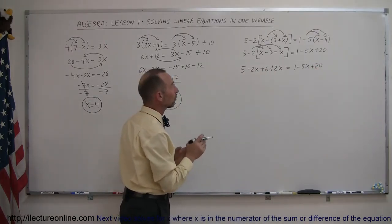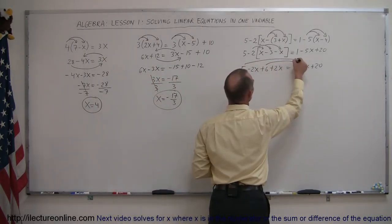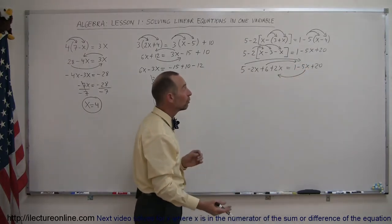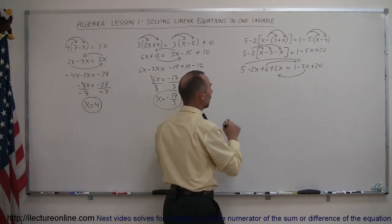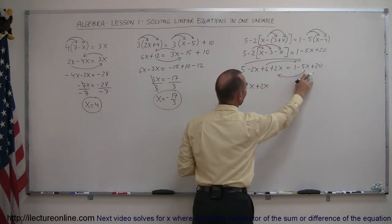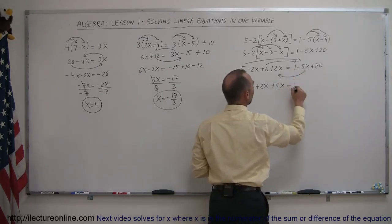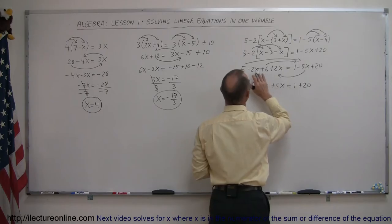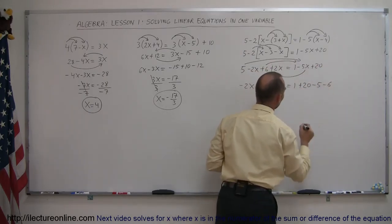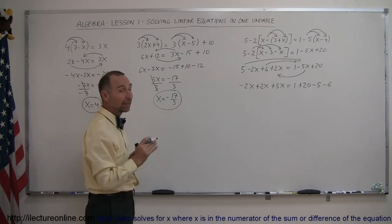Now the next step is to move all the terms with x to one side and everything else to the other side. The 5 moves to the right, the plus 6 moves to the right, and the minus 5x moves to the left — remembering that whenever we move something across the equal sign, the sign changes. So we have minus 2x plus 2x, and the minus 5x becomes plus 5x, equals 1 plus 20, and then the 5 becomes minus 5 and the plus 6 becomes minus 6.